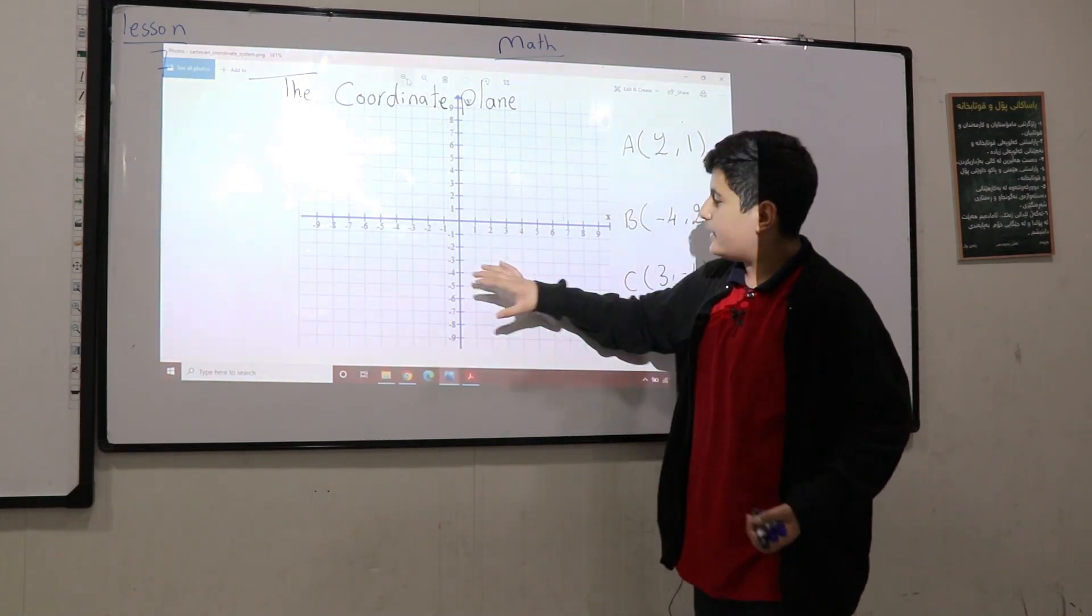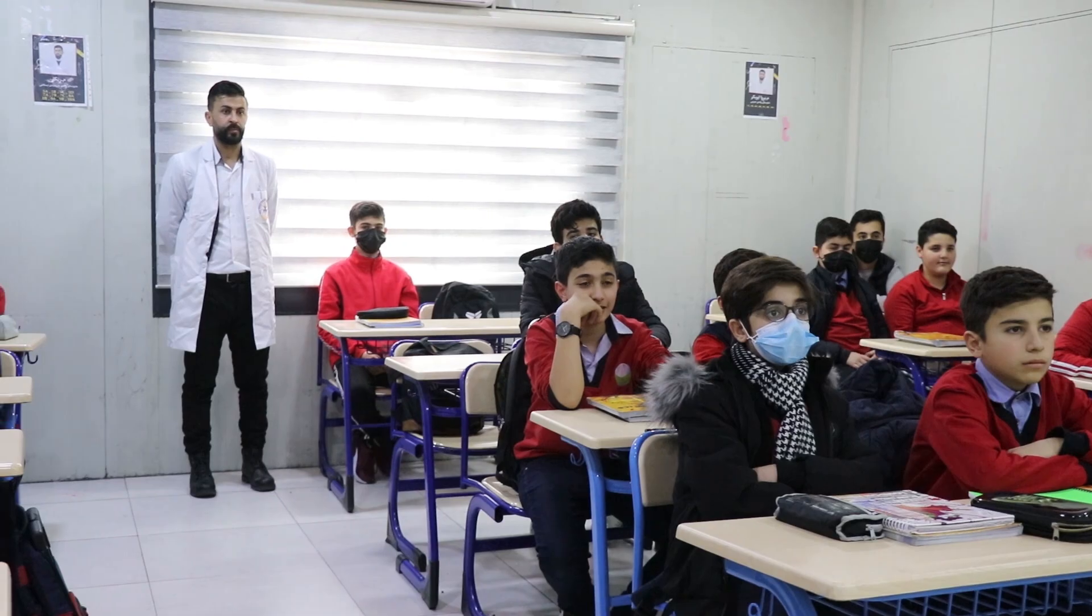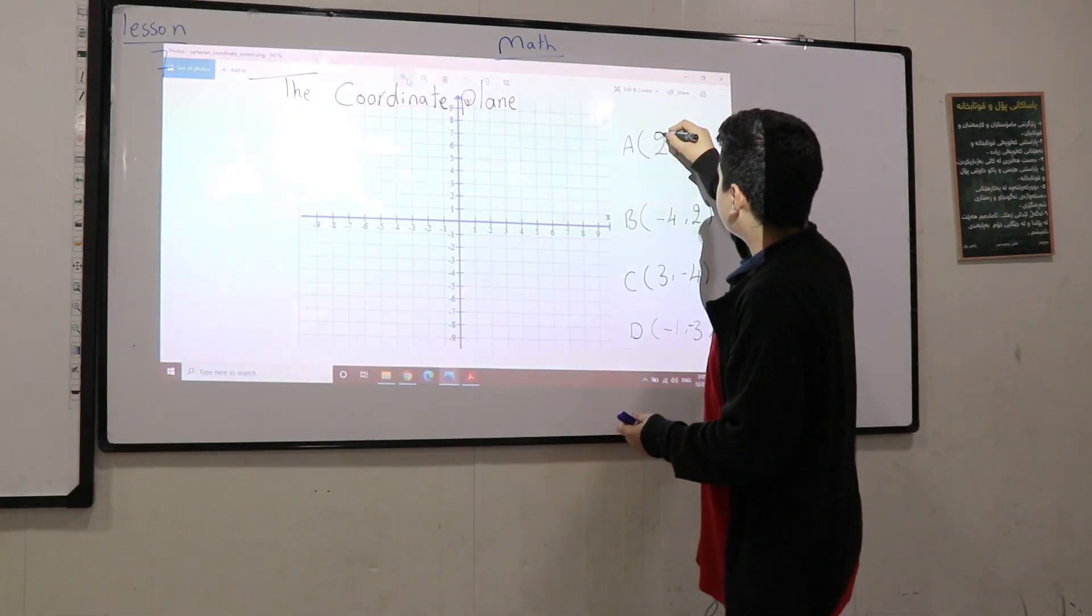And on a plane we have four quadrants: quadrants 1, 2, 3 and 4. When we have these quadrants, if we want to solve anything, the first number is always x-axis and the second number is always y-axis.